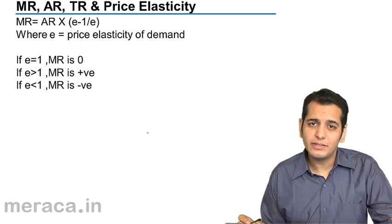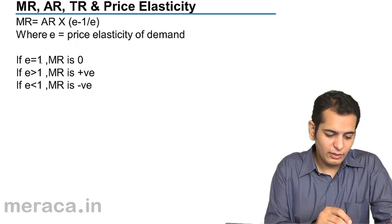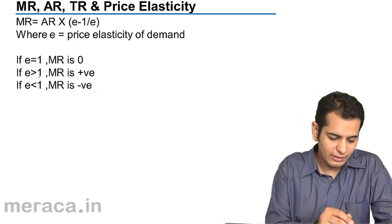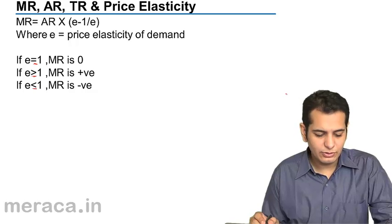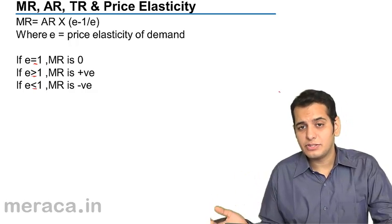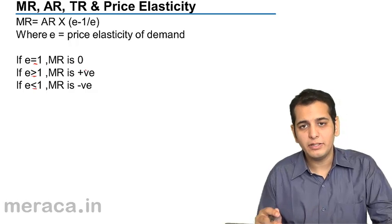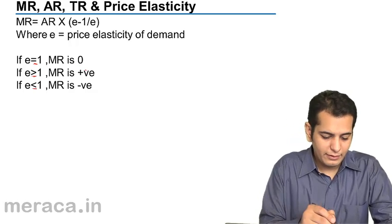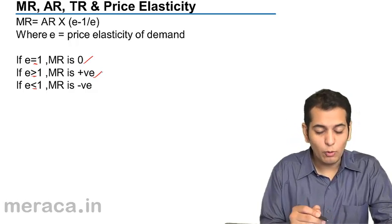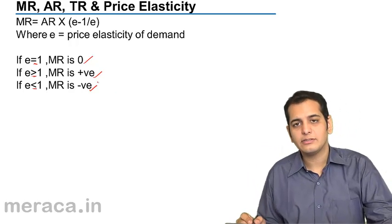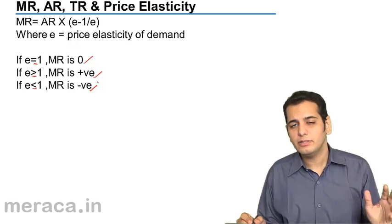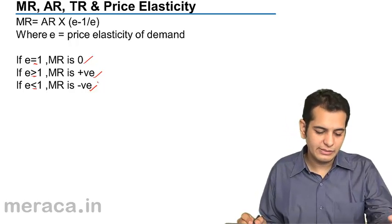Now, we are given three cases: where E equals 1, E is greater than 1, and E is less than 1. In all three cases, the answer will change. In the first case, MR will equal 0. In the second case, MR will always be positive, and in the third case, MR will always be negative. We will see how.